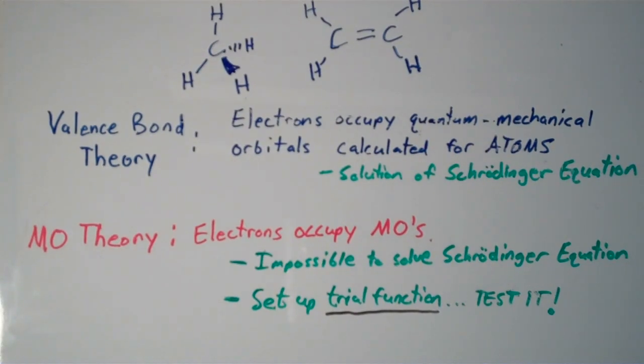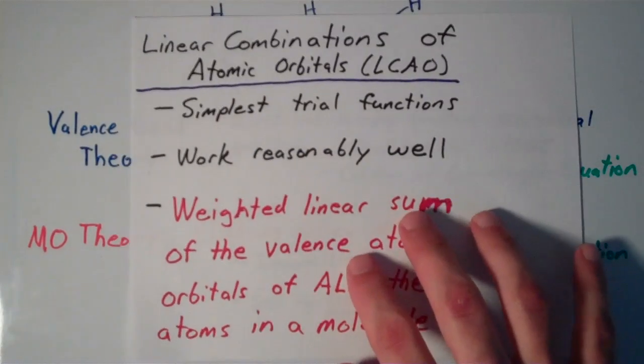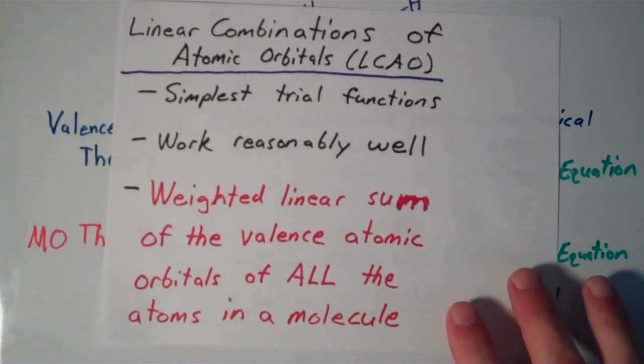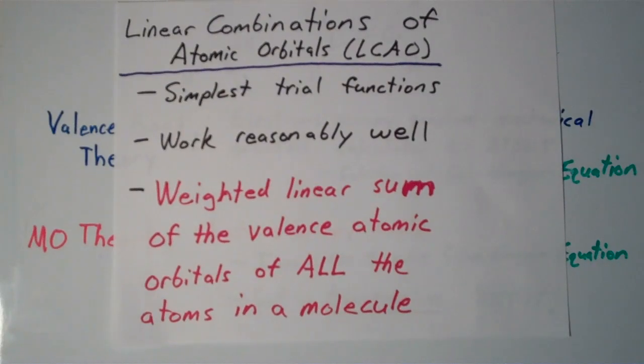So, the next best thing is, for a molecule, we can set up what's called a trial function, which is just, like, an educated guess of what the function might be, what the solution to the Schrödinger equation might be. And then, you can test it, test the trial function to see how well it works. So, the simplest trial functions are what are called linear combinations of atomic orbitals, or LCAOs. And, they work reasonably well in molecular orbital theory.